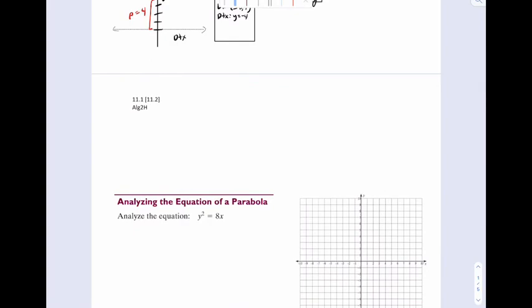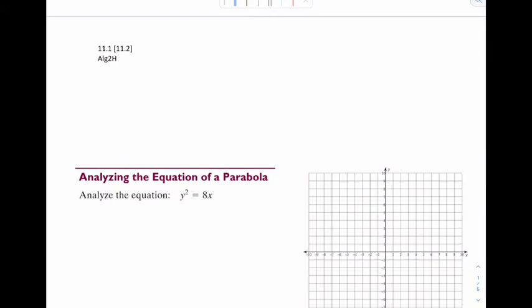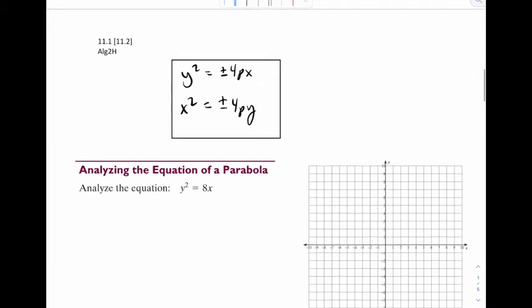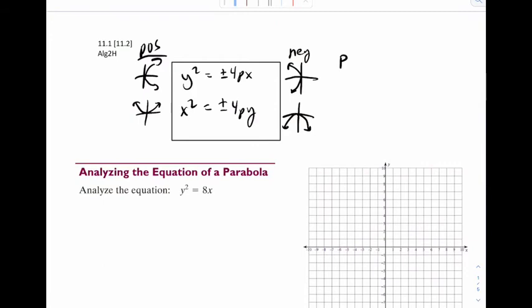Now we have a couple more examples to go through. Let's do a quick recap of what we've done so far. We have two equations. y squared is equal to 4px, and we'll put a plus or minus to indicate it could be either one. And then 4py. If it's positive, our y squared parabola opens to the right. If it's negative, it opens to the left. And if it's x squared positive, it opens up. x squared negative opens down. And of course, p is the distance from the vertex to the focus or the vertex to the directrix.